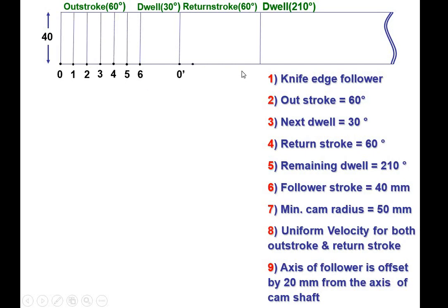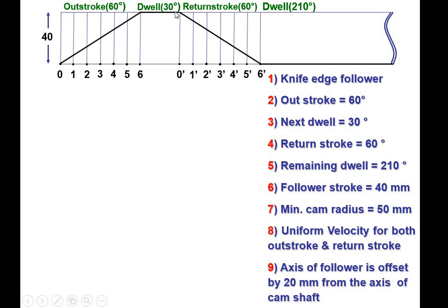Similarly, divide the return stroke into 6 equal divisions and draw vertical lines through all points from 0-dash to 6-dash. It is given as uniform velocity for both outstroke and return stroke, so draw a straight inclined line for the outstroke, a horizontal line for the dwell, a straight inclined line for the return stroke, and a horizontal line for the remaining dwell. In the examination this line must be a dark line. Give the main intersections the names a, b, c, d, e, m; for the return stroke: g, h, i, j, k, l. This is your displacement diagram.